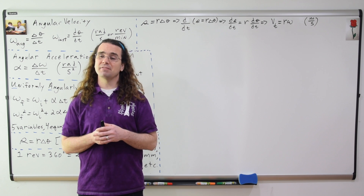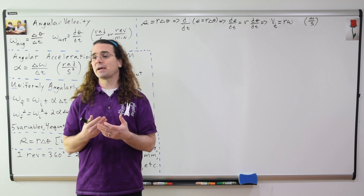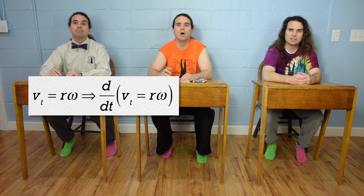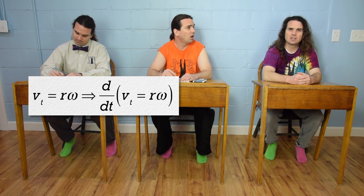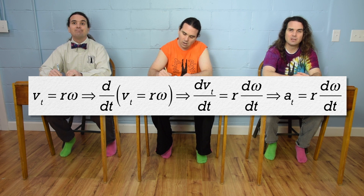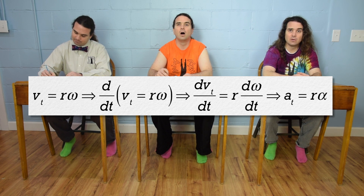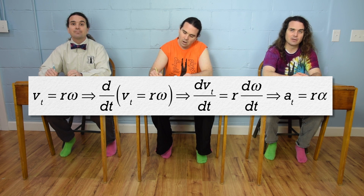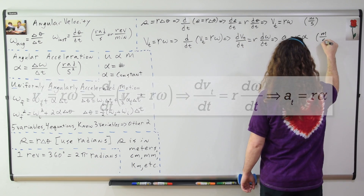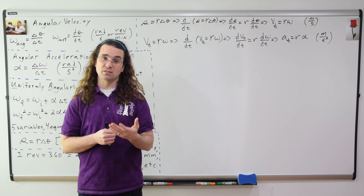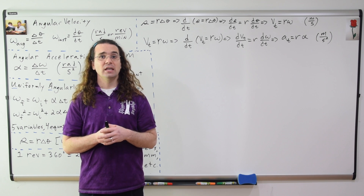Bo, please take the derivative of the entire tangential velocity equation with respect to time. The derivative of tangential velocity with respect to time is tangential acceleration, and the derivative of angular velocity with respect to time is angular acceleration. So, assuming the radius stays constant, tangential acceleration equals radius times angular acceleration. Tangential acceleration is the linear acceleration of an object when it's moving in a circle, so it has linear units — meters per second squared in base SI units.